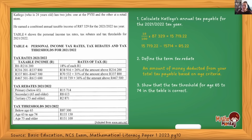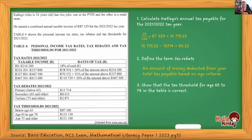Question three was awarded the most marks. The question says: show that the tax threshold for ages 65 to 74 in the table is correct. What you need to do is show that if you calculate this person's tax, they end up having to pay zero rand.